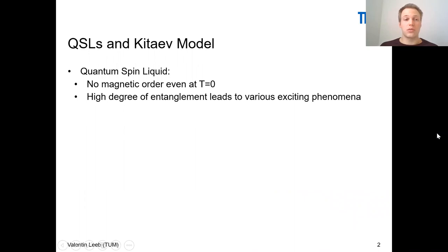Let me remind you that a quantum spin liquid is a certain state of matter which evades magnetic ordering even down to lowest temperatures. Usually quantum spin liquids feature a very high degree of entanglement, and this high degree of entanglement leads to various exciting phenomena, including anyons, fractionalized excitations, fractionalized statistics, and non-local excitations.